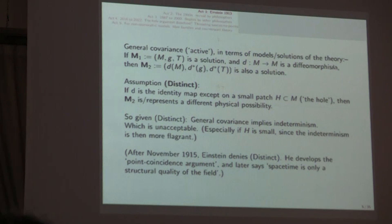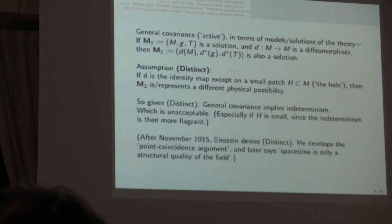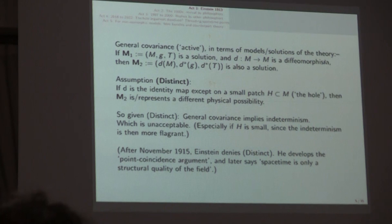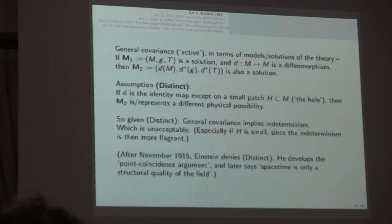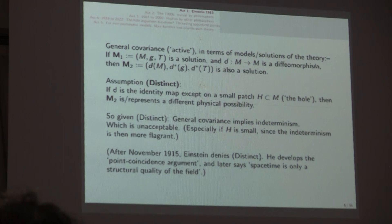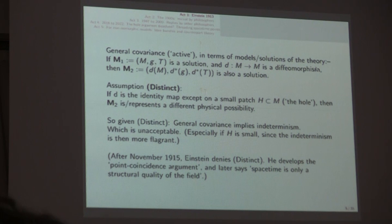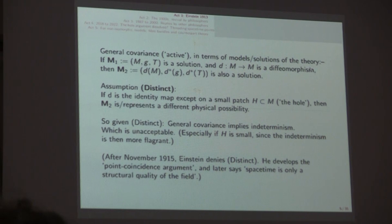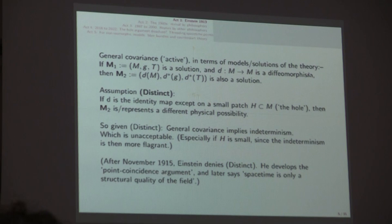The shuffling around within H has produced a different possibility, because you're taking seriously the nature of the points. Therefore, says Einstein, in the summer of 1913, general covariance implies indeterminism, which is unacceptable. And it's especially unacceptable if H is small, because then the indeterminism is more flagrant. So, the history is fascinating, because as many of you will know, he had just produced with Grossman the Entwurf theory.